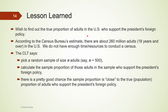Let's use a different example to consolidate these concepts for proportions. We are interested in finding the true proportion of adults in the U.S. who support the president's foreign policy. There are about 260 million adults in the U.S. The Central Limit Theorem tells us that when we pick a random sample of 500 adults and calculate the proportion who support the president's foreign policy, there is a pretty good chance that the sample proportion is close to the true population proportion.